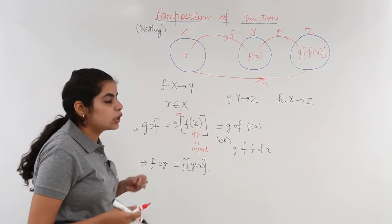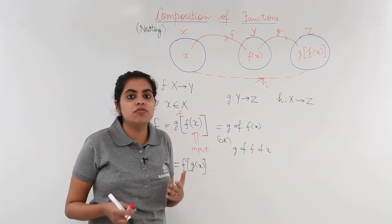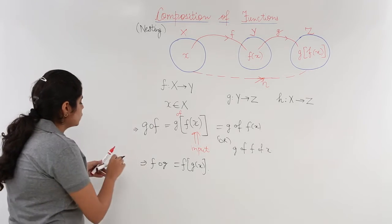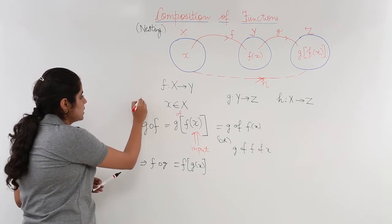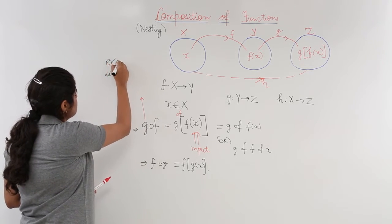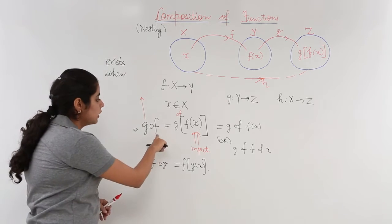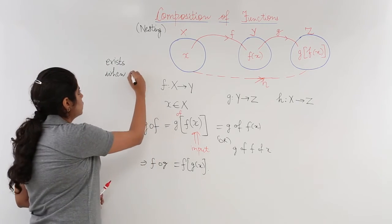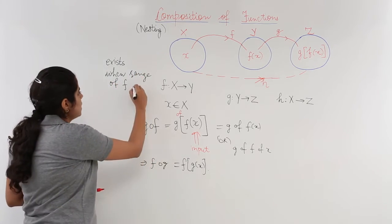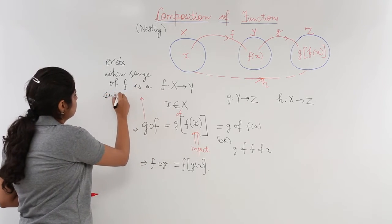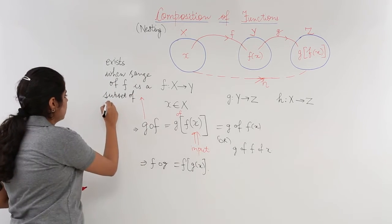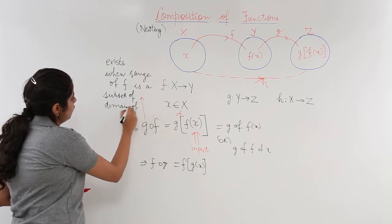Now one more thing that when does g∘f exist? When does f∘g exist? This is very important. g∘f exists under certain conditions. g∘f would exist when the range of the second thing, the range of f, the range of the second thing is f, is a subset of the domain of the first thing, domain of g.